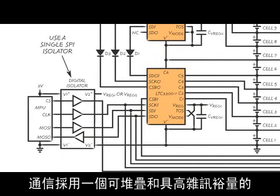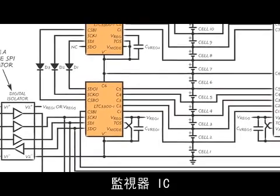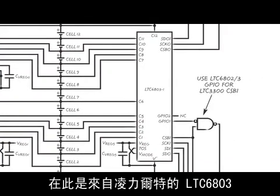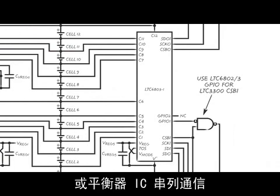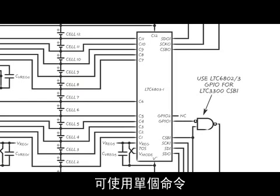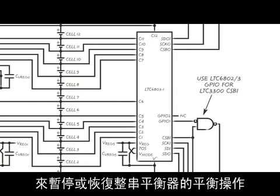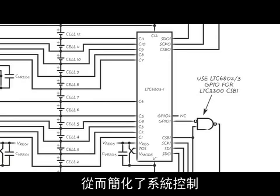Communication is accomplished using a stackable high noise margin SPI serial interface. GPIO pins on the monitor IC, in this case an LTC 6803 also from Linear Technology, can direct serial communication to either the monitor ICs or the balancer ICs. A single command can be used to pause or resume balancing for the entire string of balancers, simplifying system control.